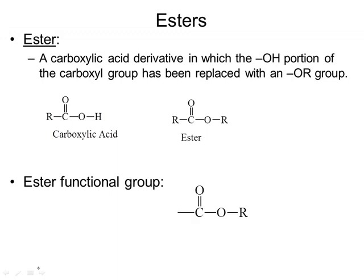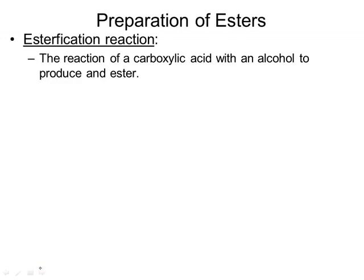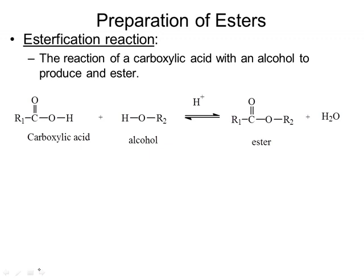The way that esters are formed is through something called the esterification reaction. This is the reaction of a carboxylic acid with an alcohol. This produces an ester. Here is fundamentally the reaction. What happens is in the alcohol, the oxygen, having these extra electrons — lone pairs — come over and attach themselves to this electron-poor carbon.